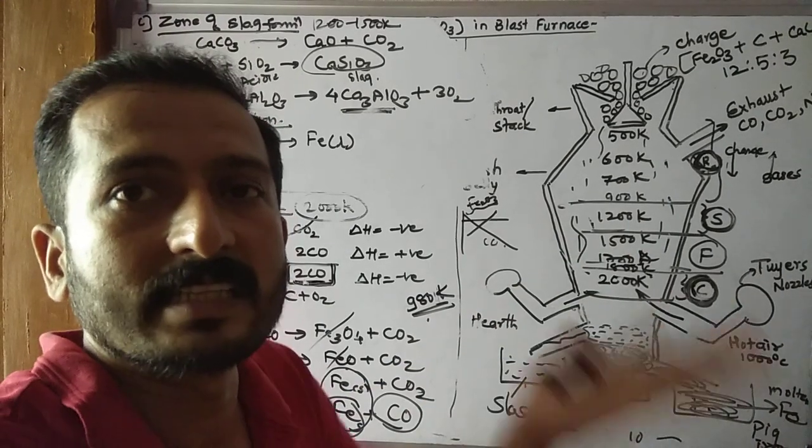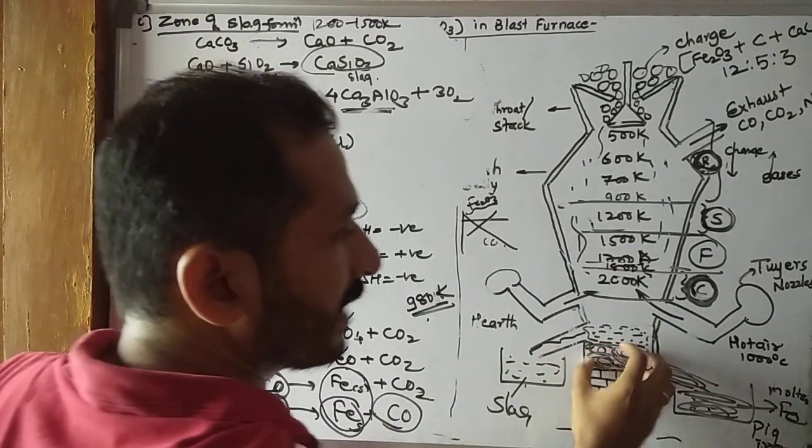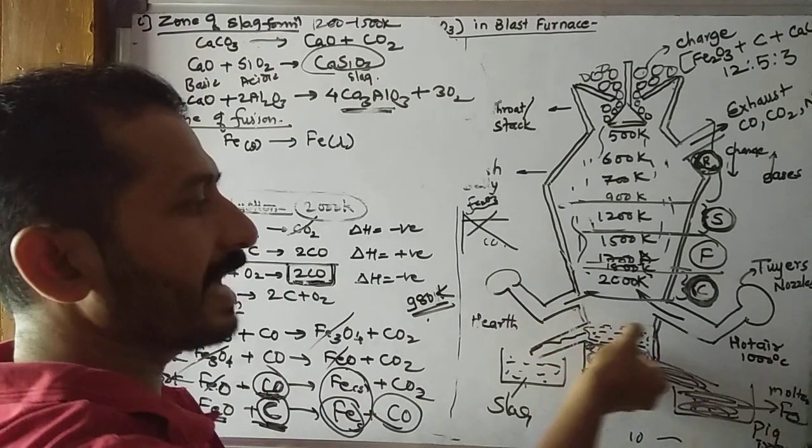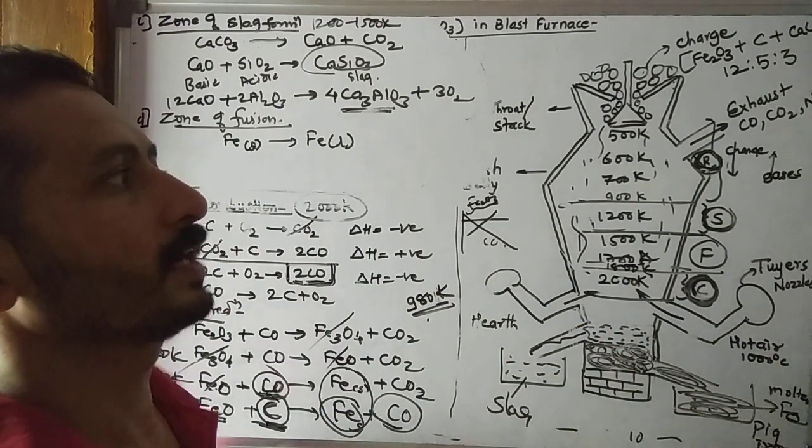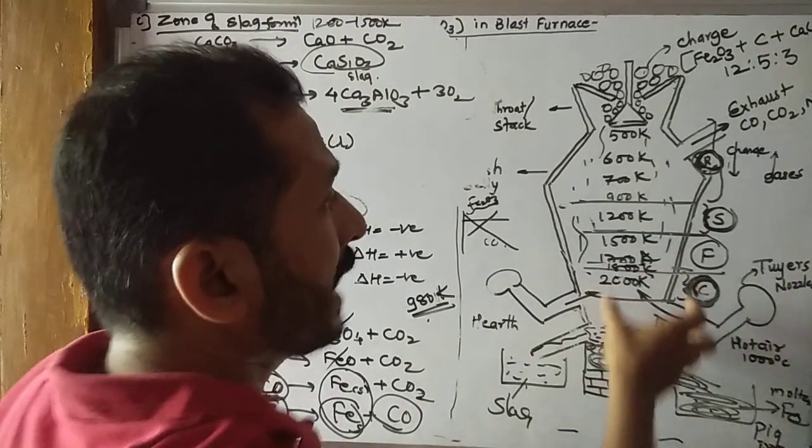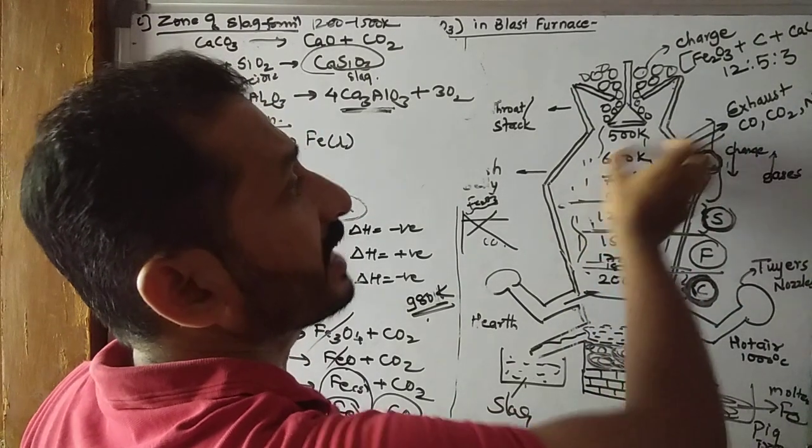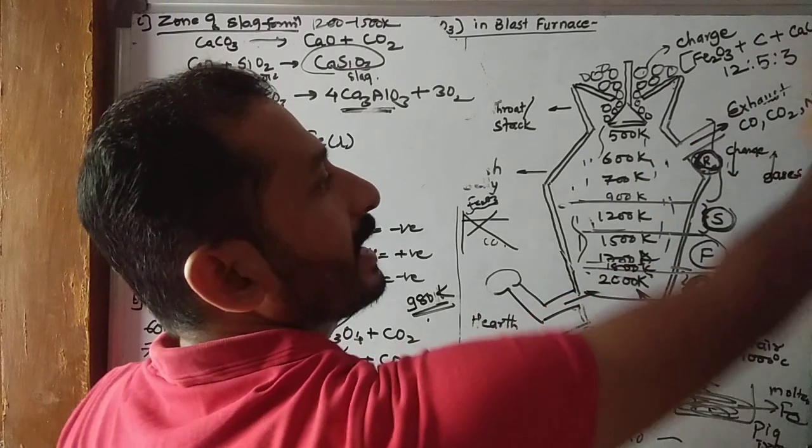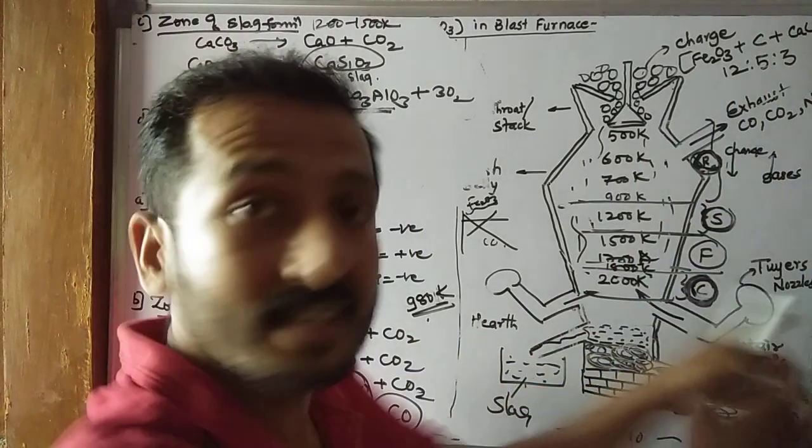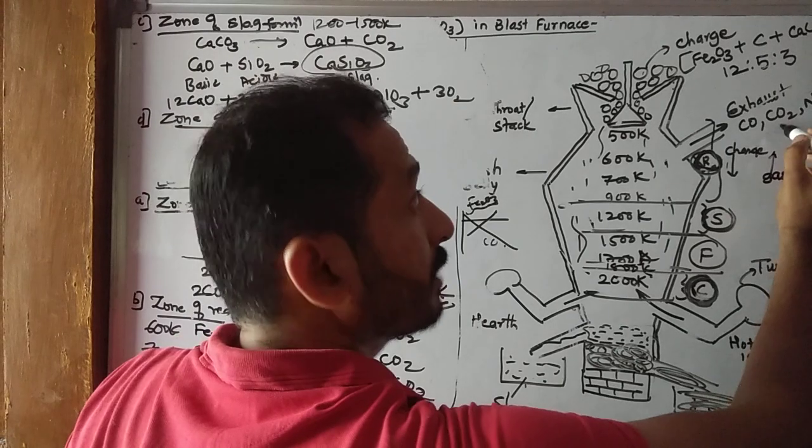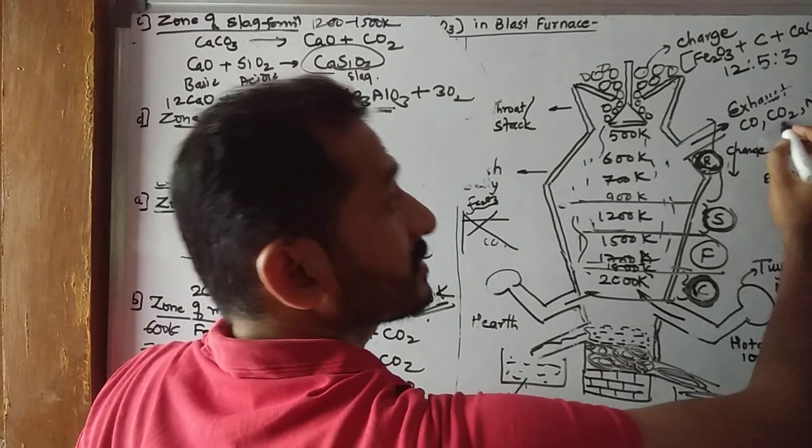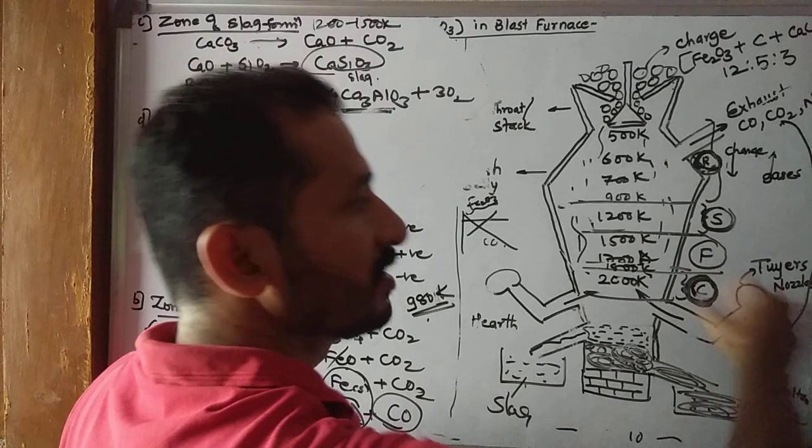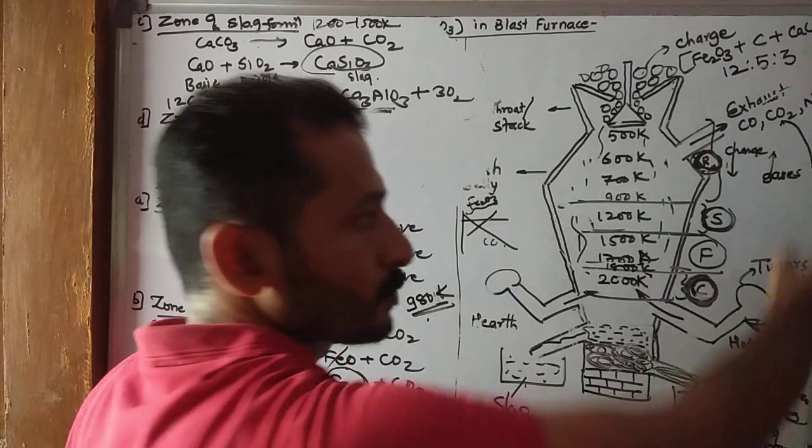But slag, being light, floats on the iron surface. Iron, being heavier, settles at the bottom. Remaining unreacted gases like CO, CO2, and N2 exit through the exhaust. These hot waste gases are used to heat the incoming hot air. These waste gases still have heat, so they are used to heat the oxygen or hot air before it enters the furnace.